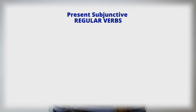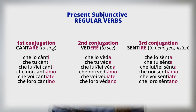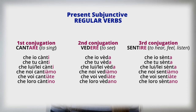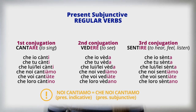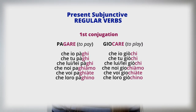Now let's begin with the present subjunctive. According to the conjugation type, regular verbs replace the ending of the infinitive — '-are', '-ere', or '-ire' — with the following endings of the present subjunctive. Be careful, because the 'noi' form is exactly the same as the present indicative.